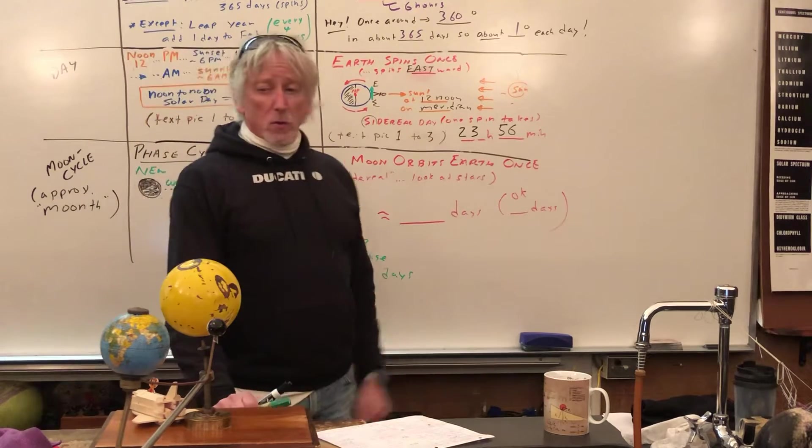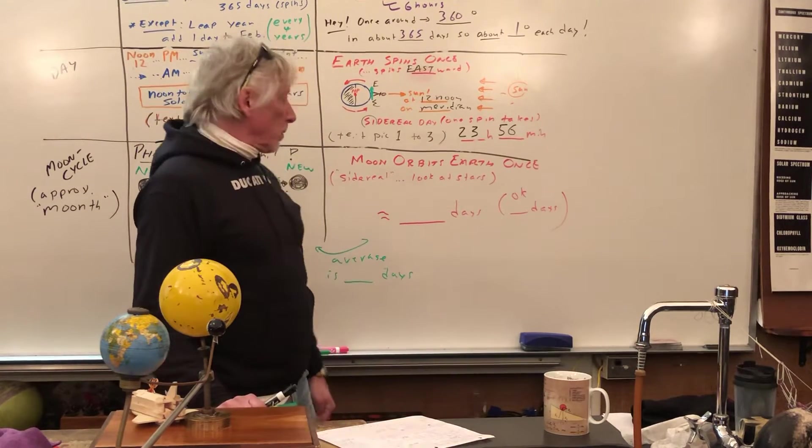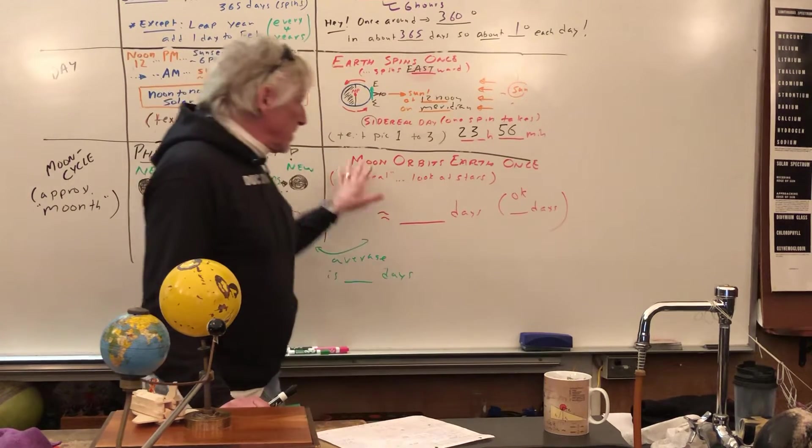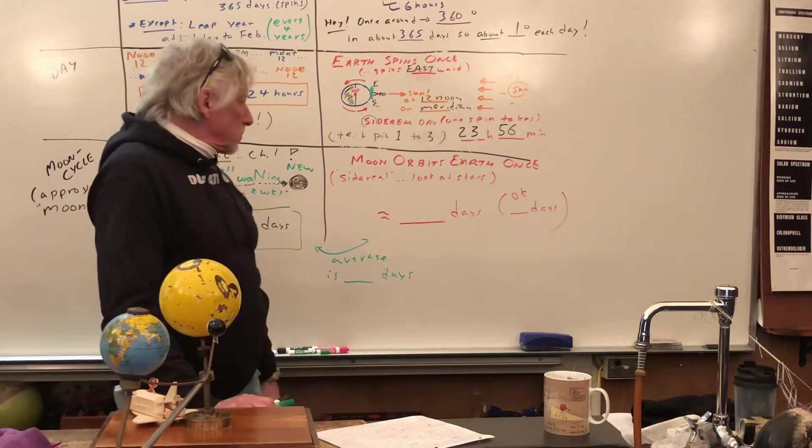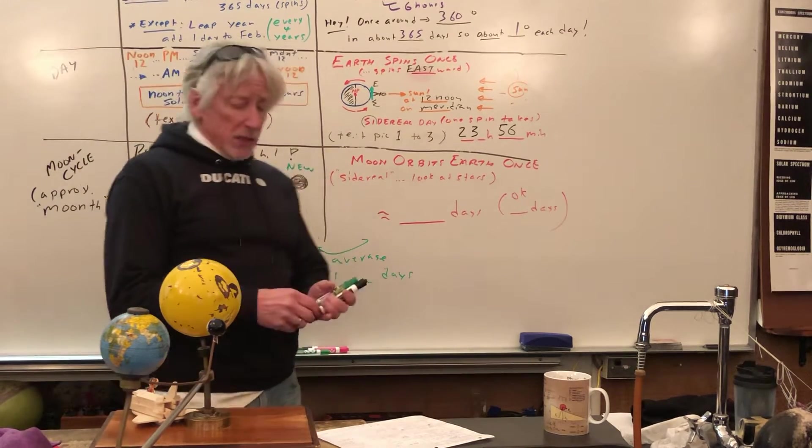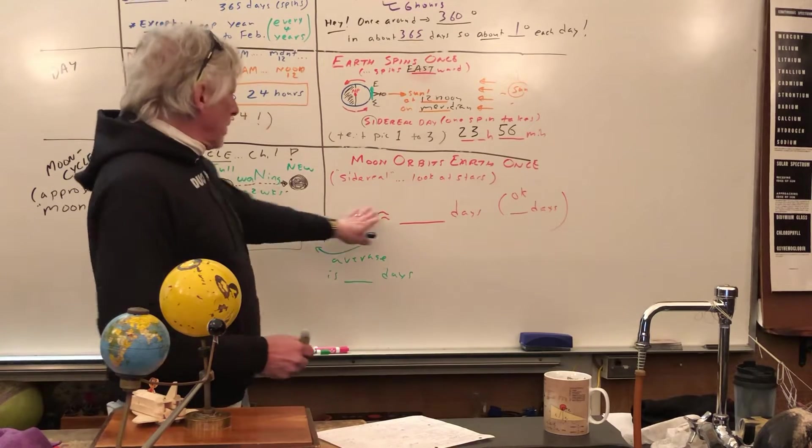Moon orbits Earth once. Moon orbits Earth once. We call it a sidereal period or length of time. That's parenthetical. Don't sweat that. And how long does that take? Let's just write this down and then explore why.